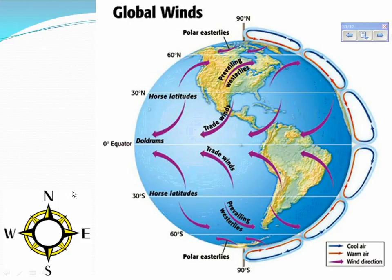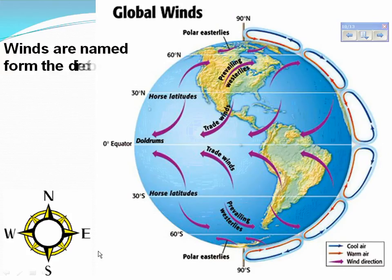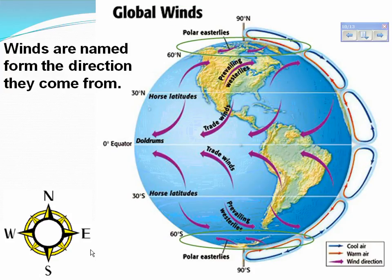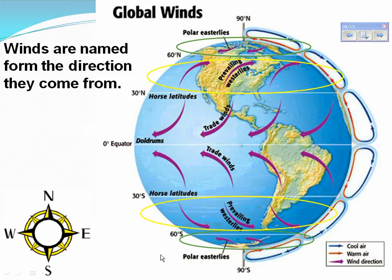When looking at global winds, it is good to remember our cardinal directions: north, south, east, and west. Winds are named by the direction they come from. The polar easterlies start at the east and move to the west, in both the northern and southern hemispheres — therefore they are called easterlies. The prevailing westerlies start at the west and move to the east, therefore they are called westerlies, in both hemispheres.